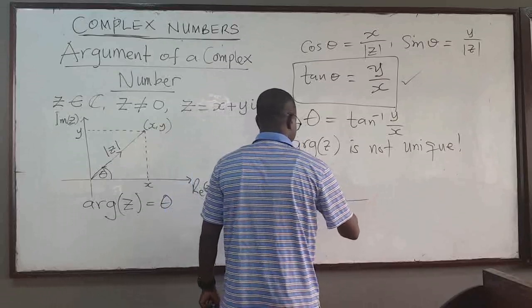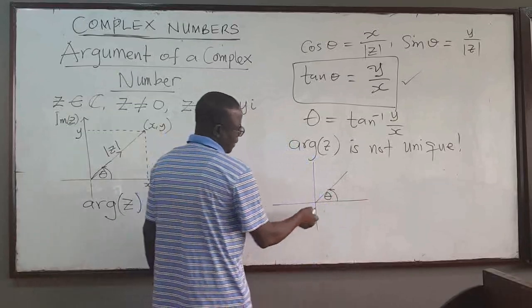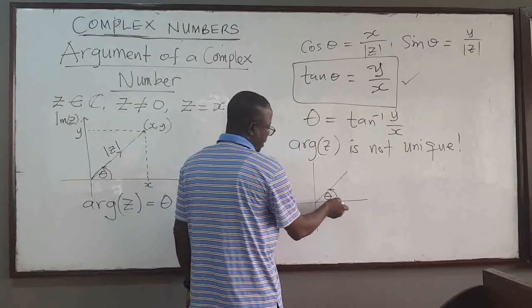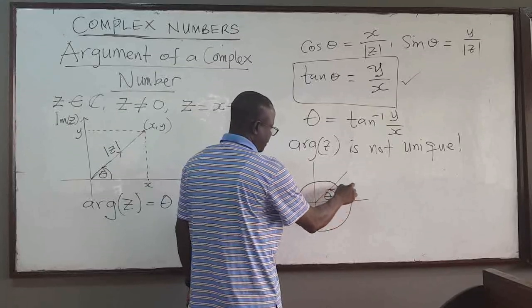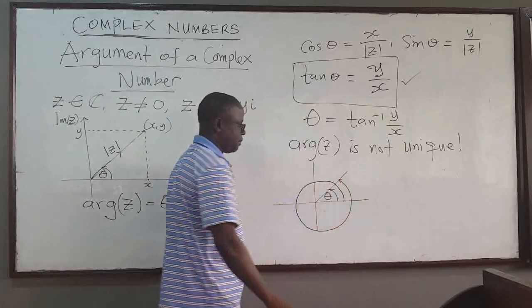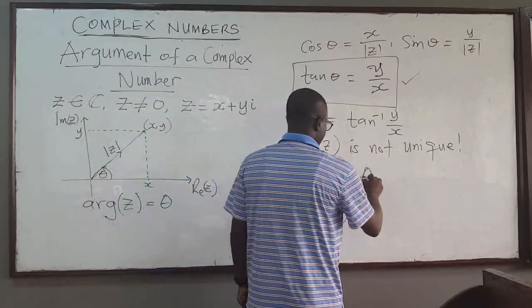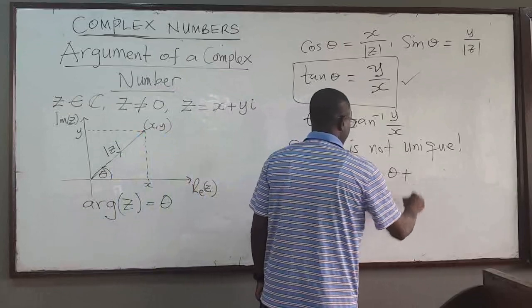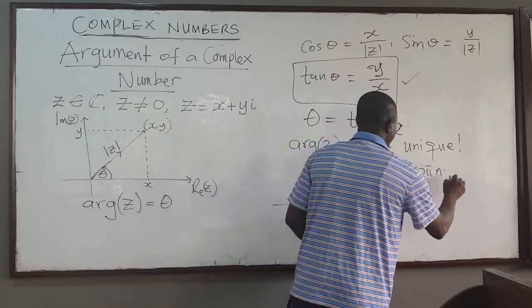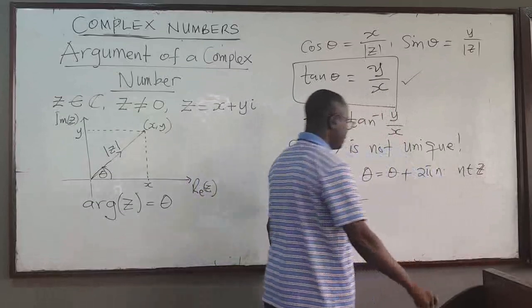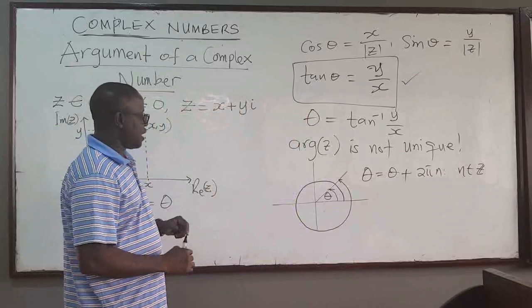If I have an angle theta here and I go around 360 degrees, I'll be back to the same line. So theta here is represented as theta plus multiples of 2π — that is, theta + 2πn, where n is an integer. So the argument of the complex number is not unique. You can have several angles that represent it: it could be theta, theta plus 360 degrees, theta plus 2π, 4π, and so on — you get the same position.